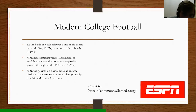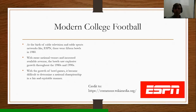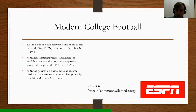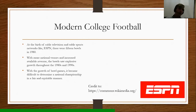Modern college football: With the birth of cable television and cable sports networks like ESPN, there were 15 bowl games in 1980. With more national venues and increased revenue, the bowl system saw explosive growth during the 1980s and 90s. With the growth of bowl games, it became difficult to determine a national championship in a fair and equitable manner. College football has really become a big business, fueled by national exposure that started in the 1970s and accelerated through the 80s and 90s, closely tied to ESPN and college game day.